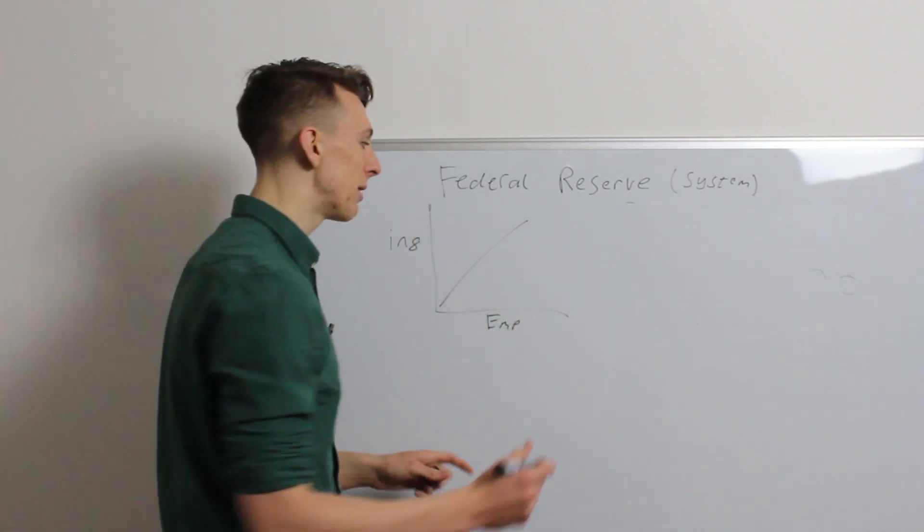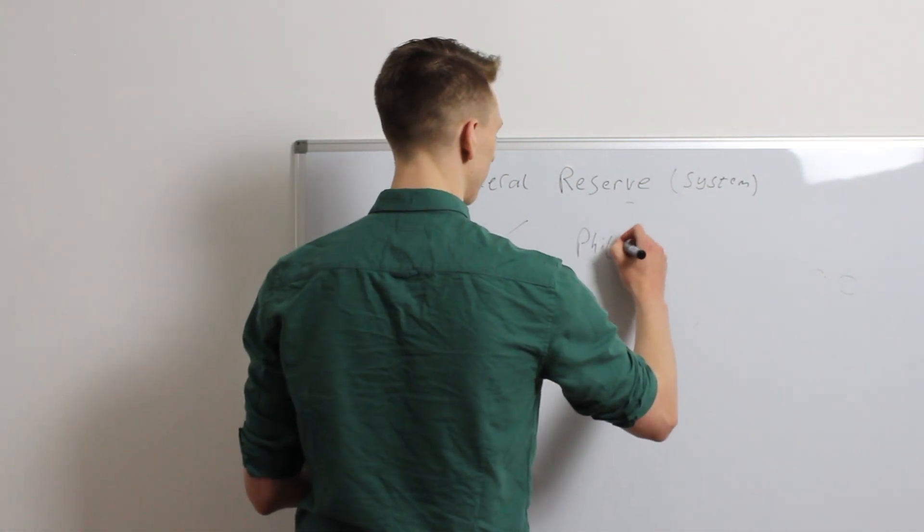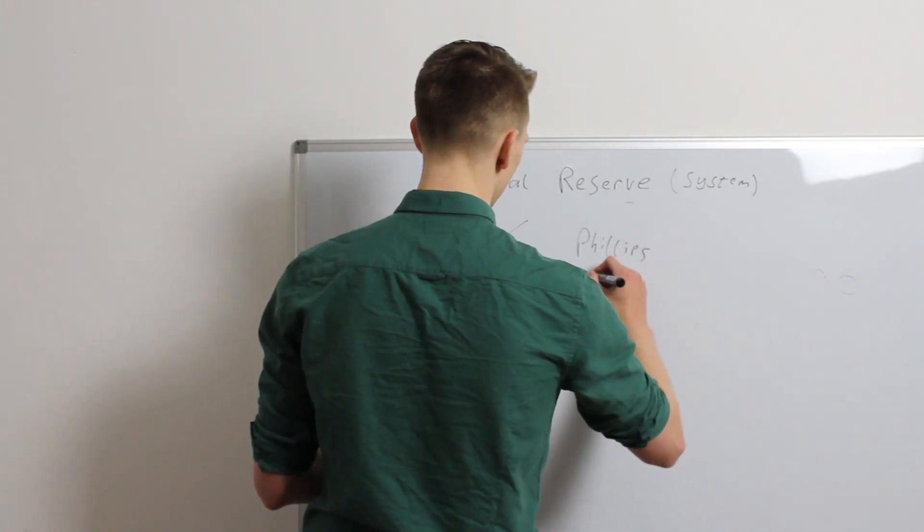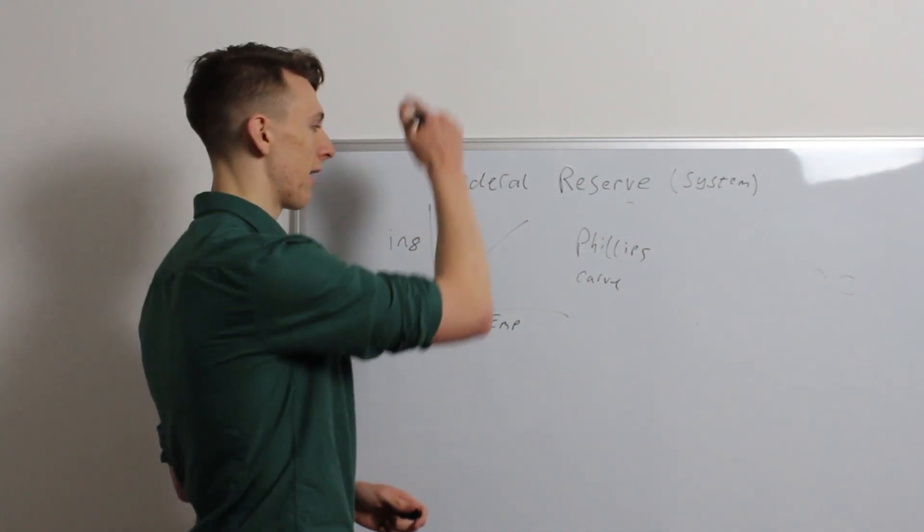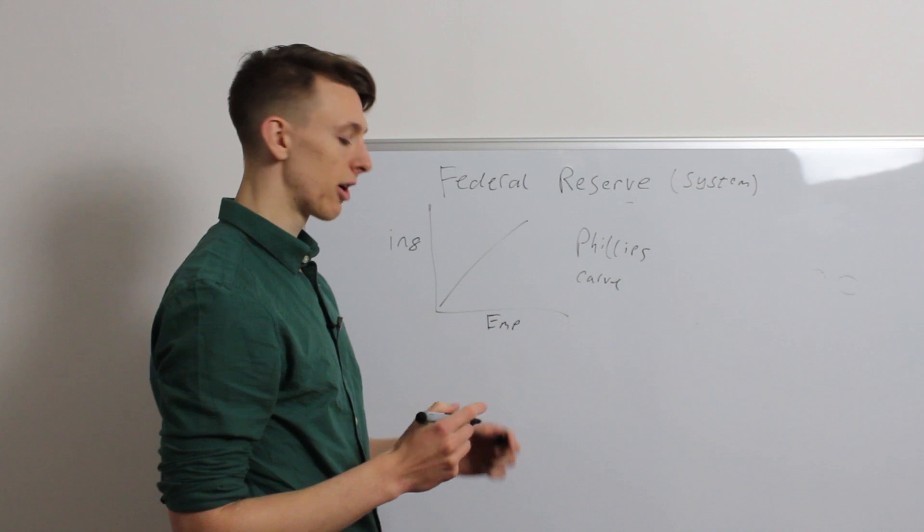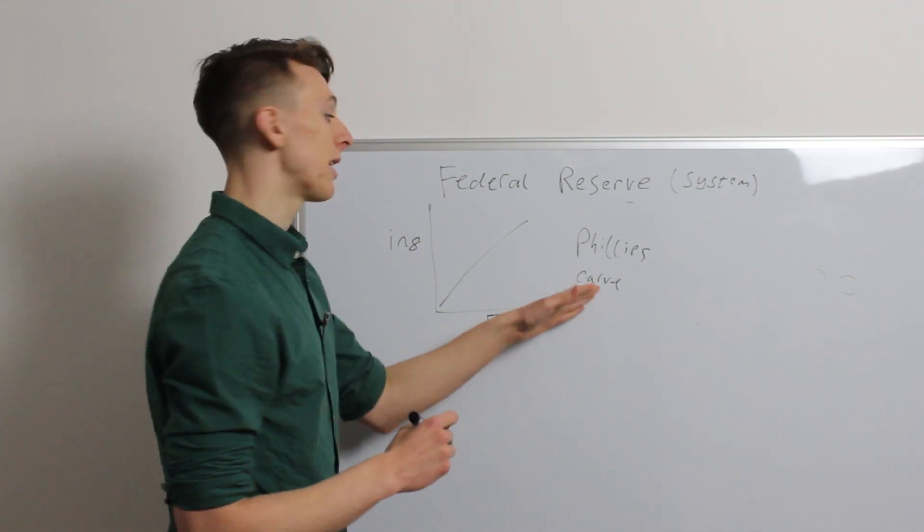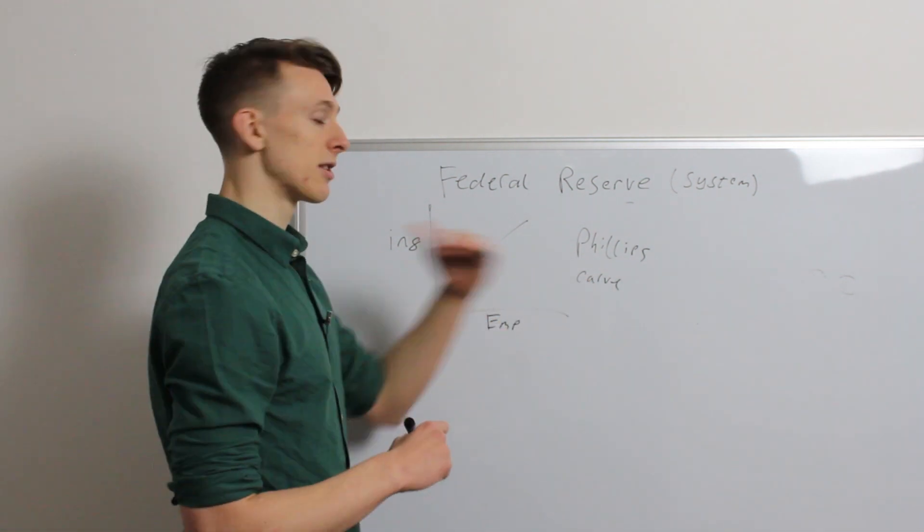And if anybody wants to look at this up in more detail, this is called the Phillips Curve. The Phillips Curve actually uses unemployment on this bottom one here, and they have a decreasing curve or something like that. But yeah, have a look at that and get some more details on that.